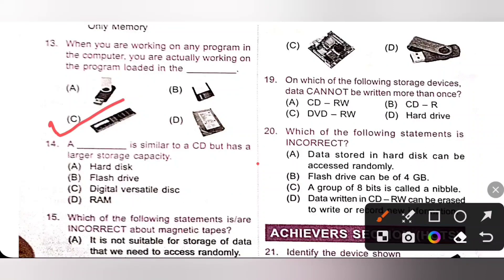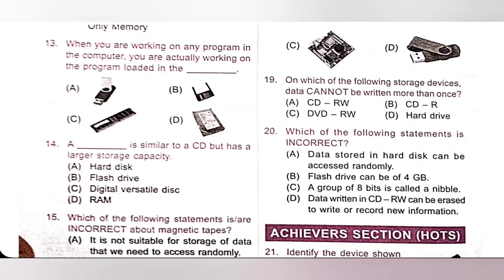Fourteenth one: A dash is similar to a CD but has a larger storage capacity — that is DVD. A DVD is similar to a CD but has a larger storage capacity. Option C, Digital Versatile Disc, is the correct answer. Thank you, my dear kids. We will see the remaining questions in the Part 2 video. If you like this video, please like, subscribe, and share.